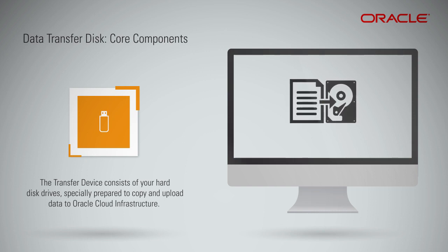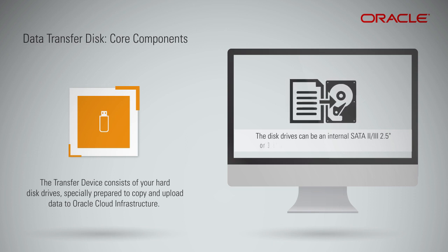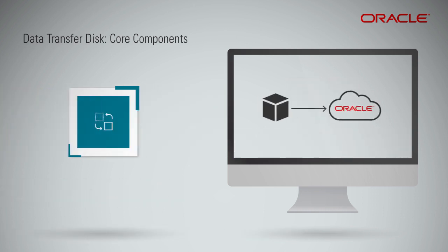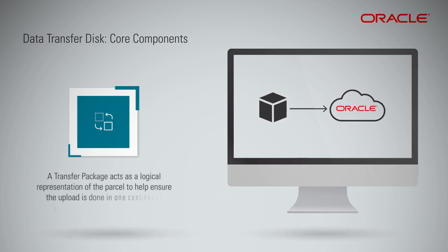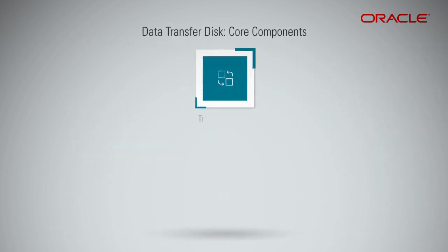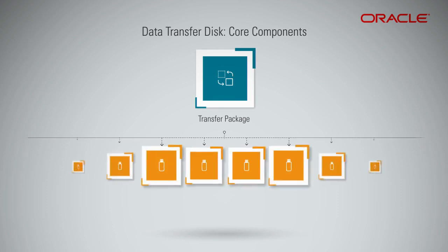You can copy your data onto one or more of these devices and ship them to Oracle for upload. The disk drives can be an internal SATA 2 or 3, 2.5-inch or 3.5-inch drive, or an external USB 2.0 or 3.0 drive. When using Data Transfer Disk, your data may reside on multiple disks. A transfer package acts as a logical representation of the parcel to help ensure the upload is done in one continuous operation across multiple disks. Each transfer package can include up to 10 transfer devices.